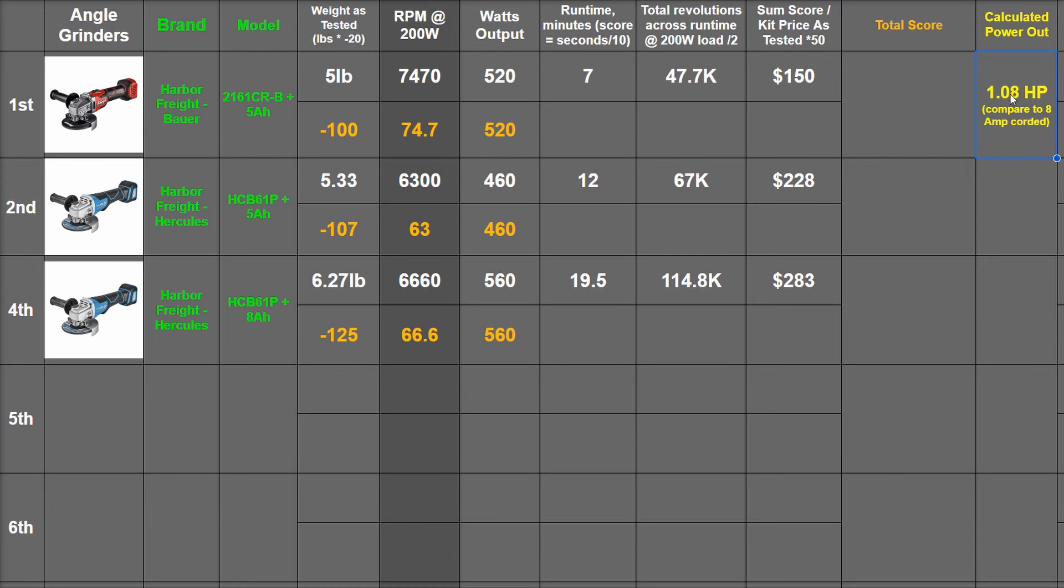That equals 1.08 horsepower out for the Bauer, which compares based on our testing close to an 8 amp corded angle grinder that we've bought. Then 0.96 horsepower out for the Hercules, which would be about a seven and a half amp angle grinder. And 1.17 horsepower for the 8 amp hour configuration, which would compare closest to a 9 amp grinder based on our measurements so far.